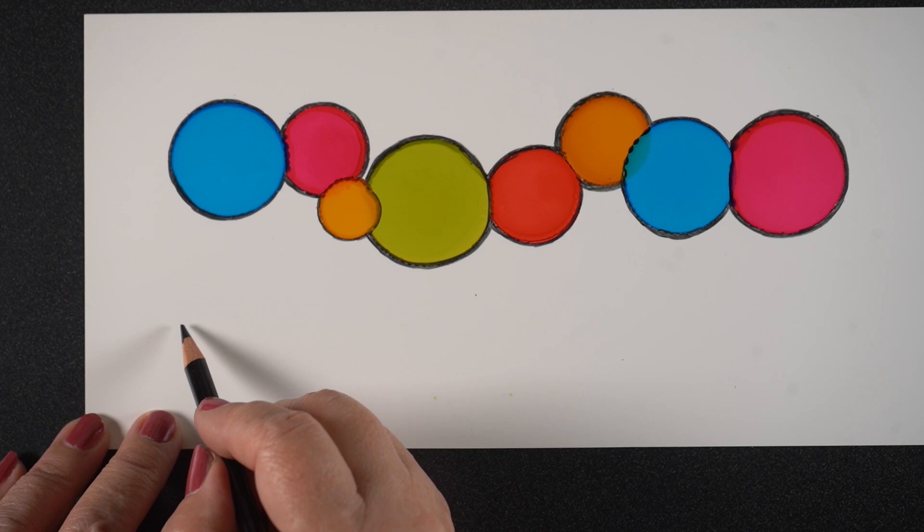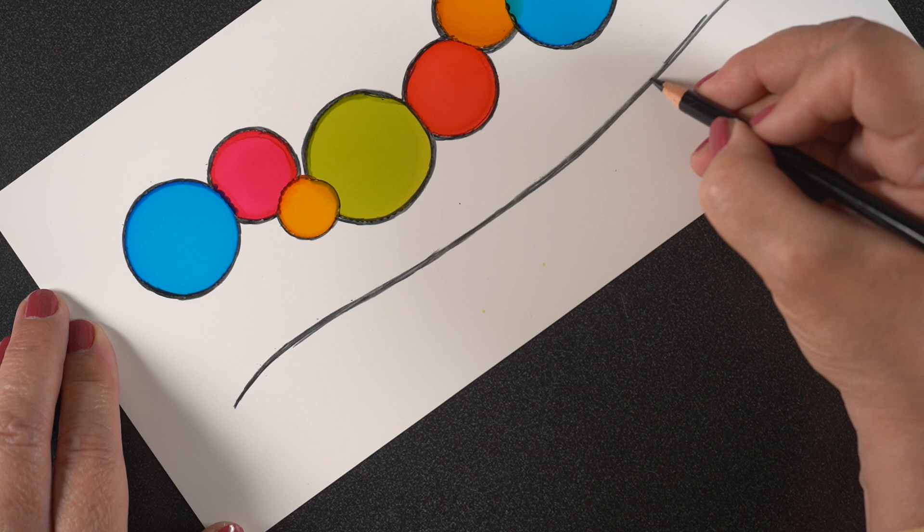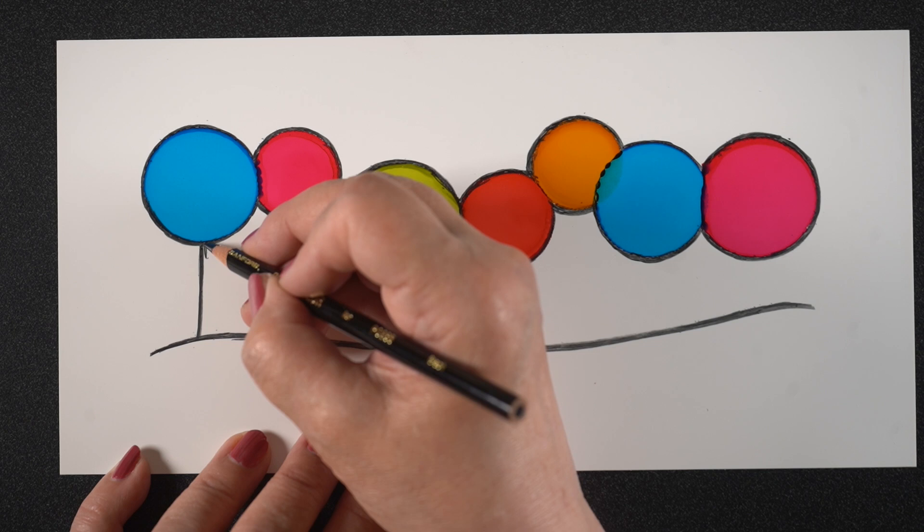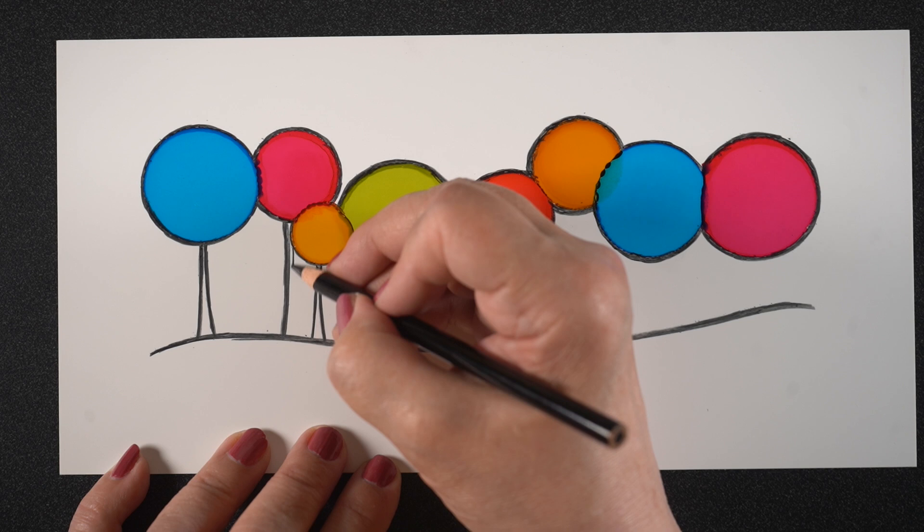So next I'm going to add a horizon line. Mine's going to be a little curved. You can also do one that's straight, and then I'm going to sketch in some tree trunks. Very simple to do, wider at the bottom, skinnier at the top. You can add tree trunks that have branches. You could make yours straight. They don't have to be curved like this. Lots of different ways to do it.